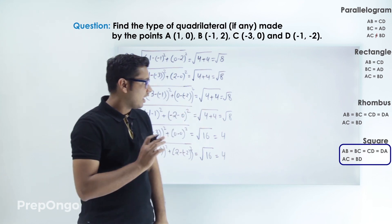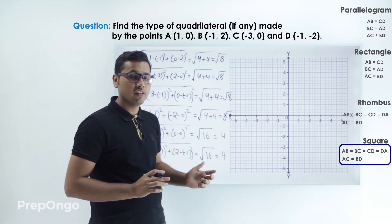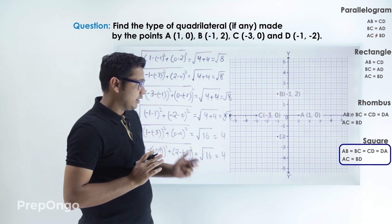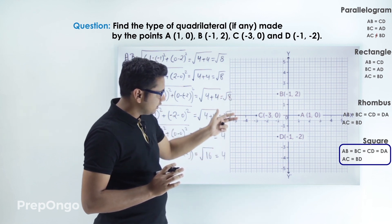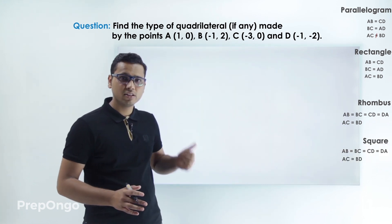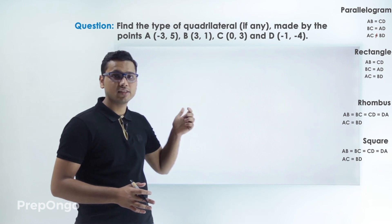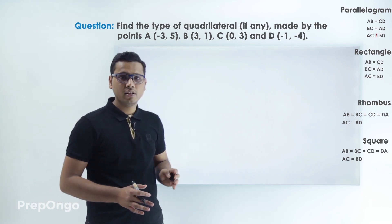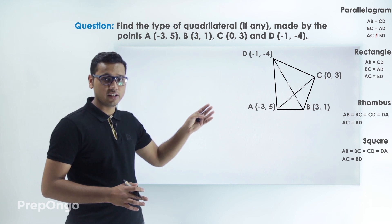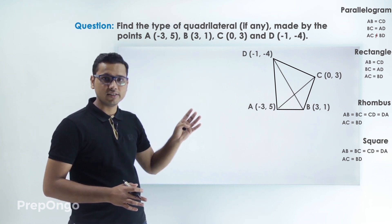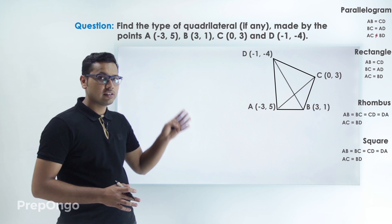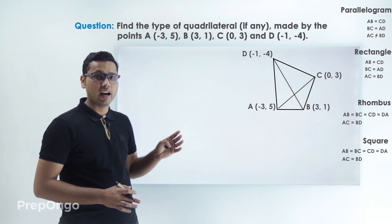We can also plot the values on a graph. If we plot all the points A, B, C, and D and join AB, BC, CD, and DA, you will find that we get a square. Now we'll apply the same concept on a second quadrilateral whose coordinates are given as ABCD, finding all side lengths and diagonal lengths to determine whether it's a parallelogram, rectangle, rhombus, or square.